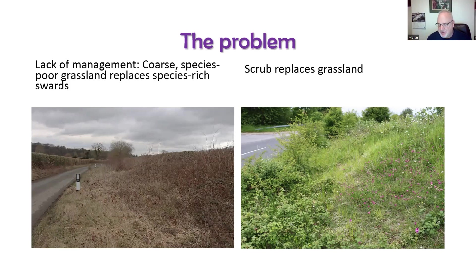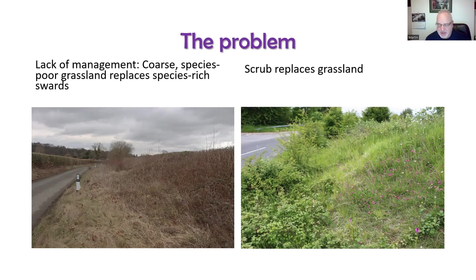There's another example on the right of some magnesium limestone grassland near Tadcaster — very rich habitat with lots of orchids on the slope, but because it's not being managed it's essentially turning into scrub, with hawthorn bushes and brambles developing. Scrub is a lovely habitat, but here a much rarer habitat is potentially disappearing because there is no management. In North Yorkshire the problem with roadside grasslands is often a lack of management rather than too much management.